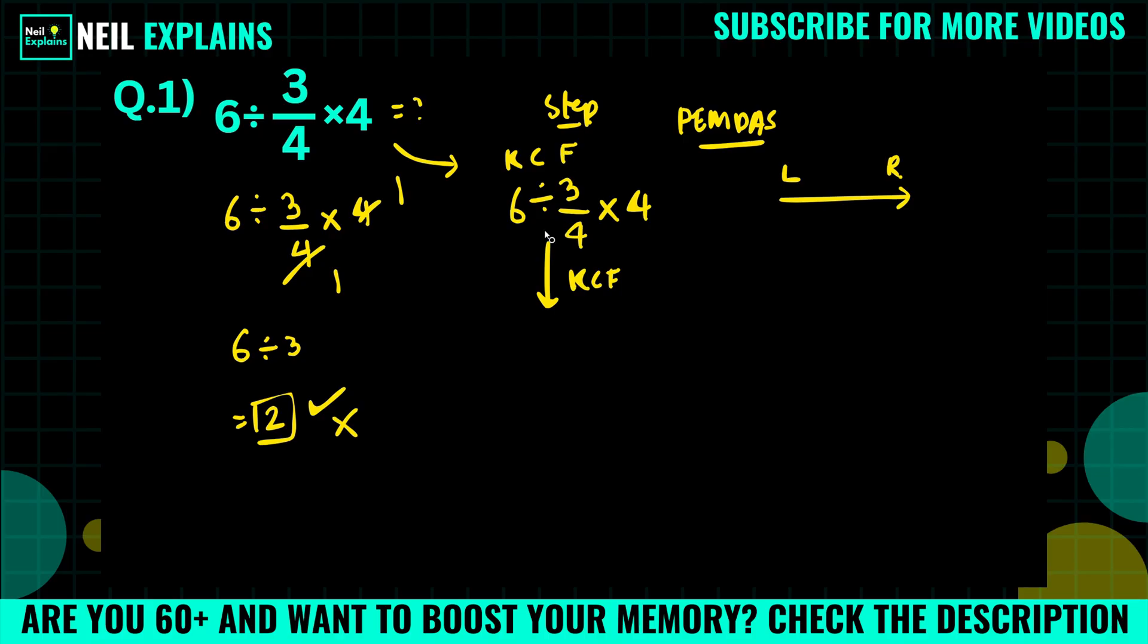KCF stands for Keep, Change, and Flip. We have to keep this, actually keep, change, and flip. We have to keep 6 as it is, we have to change this division into multiplication, and we have to flip this 3/4 into 4/3, like numerator will go to denominator and denominator go to numerator.